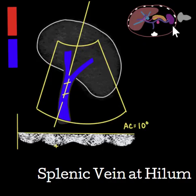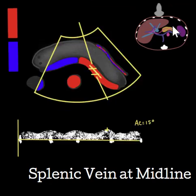Start the splenic vein at the hilum. Use the left intercostal window to show a blue vessel exiting the spleen. Pulsed wave Doppler should show steady flow if the patient is holding their breath, or phasic flow if the patient is breathing, all beneath the baseline. With angle correction on and less than 60 degrees, measure the fastest velocity recorded. Evaluate for patency and flow direction as well.